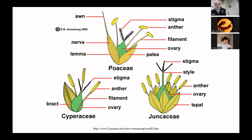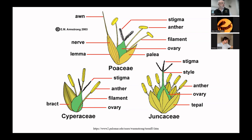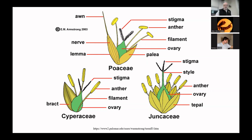Looking at differences in flower structure: the grass flower — the Poaceae — has the reproductive part enfolded by two scales, the lemma and palea, with glumes also underneath. The sedge flower has a single scale called a bract — different from the grass flower in that respect. And the rush family looks very different: what appear to be six scales are actually petals and sepals — collectively called tepals — that surround the capsule, the reproductive part that turns into a many-seeded capsule. Those are the distinctions between the three families in the flower.